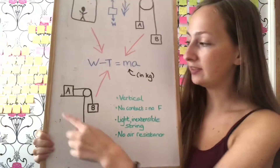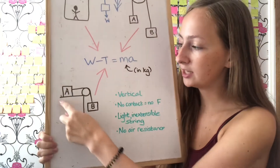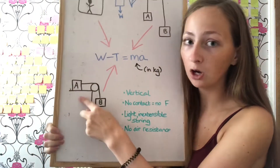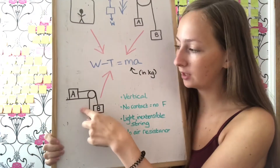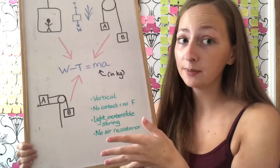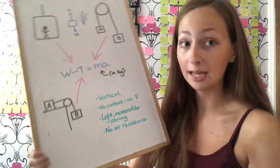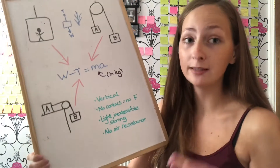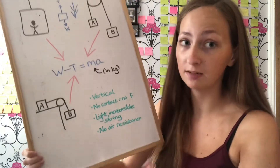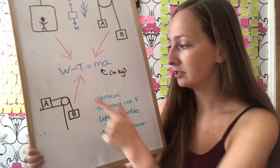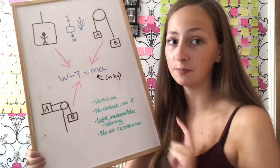In the pulley-on-table setup, you would state whether the table is rough or smooth depending on whether you're considering friction, and usually the pulley is smooth as well.